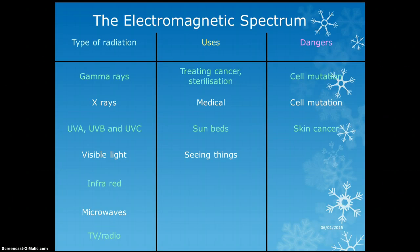Visible light we obviously use to see things, which doesn't really have any dangers unless you look directly at the sun, because it's such a lot of light that it can damage your retinas.